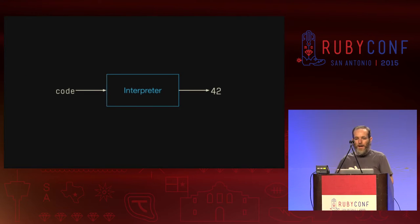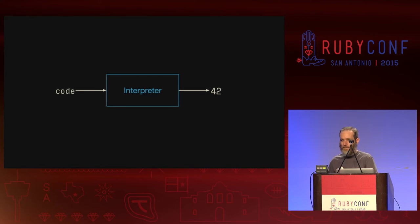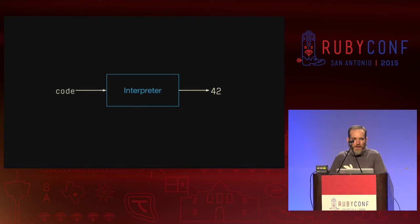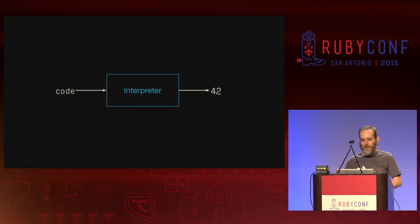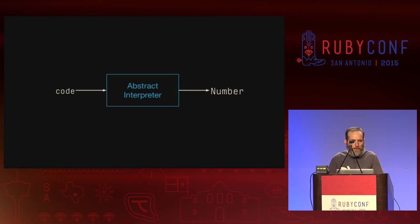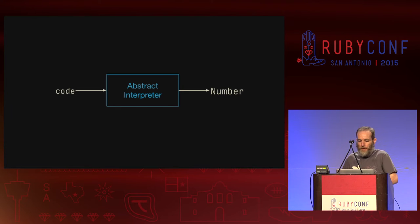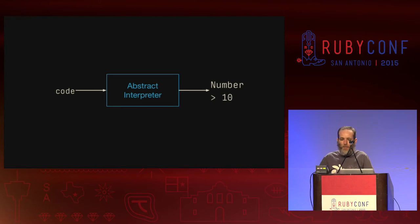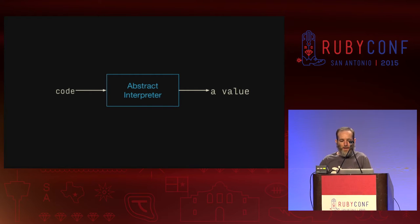To give you an idea of what this means: imagine you've written a program, you feed it into the interpreter, and the interpreter runs the code and produces the resultant value — say, the value 42. Now, to make this more abstract, we still return the same kind of thing, just with less detail. So instead of saying the answer is 42, we'd say the answer is just a number. You could say it's a number greater than 10, or maybe just that it's a value.